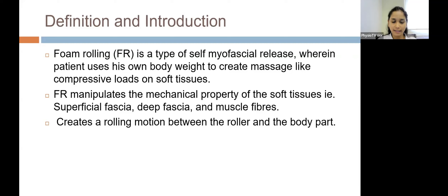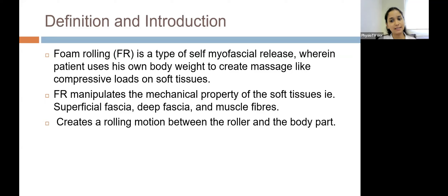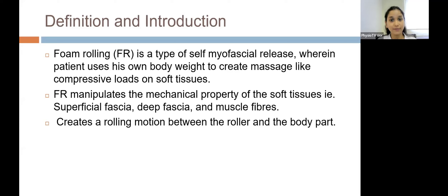Foam rolling manipulates the mechanical property of the soft tissues — that is the superficial fascia, the deep fascia, and the muscle fibers. It alters the mechanical property of these structures, and we will see in further detail how it actually works.